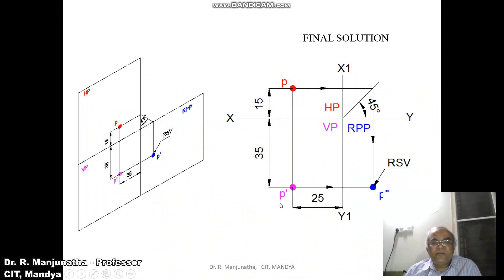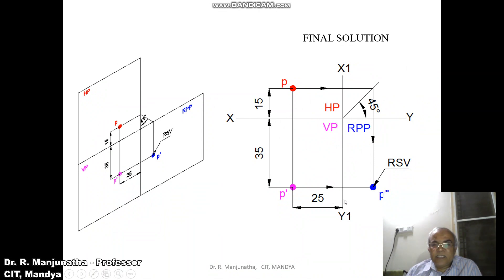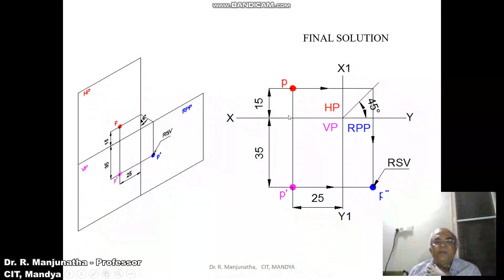Now for the final solution in the sketchbook: draw the XY line and X1Y1 line with thin lines, marking the horizontal plane above XY, the vertical plane below XY, and RPP adjacent to the vertical plane. From the X1Y1 line, measure 25mm in both the vertical plane and the horizontal plane and draw a vertical projector. The distance 35mm below HP is seen in the vertical plane — measure and mark this point as p-dash.